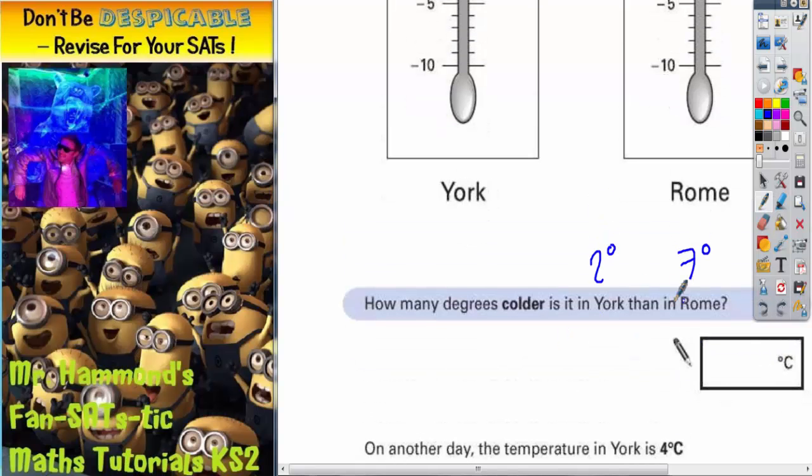So what we need to do is find the difference between them. Now you can probably do this in your head. So it's going to be 5 degrees, isn't it, to get from 2 to 7. So it's 5 degrees colder. Another way of doing it is you could have just said, what's 7 take away 2, which is also 5 degrees. 5 degrees is the answer.